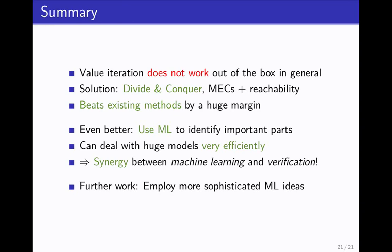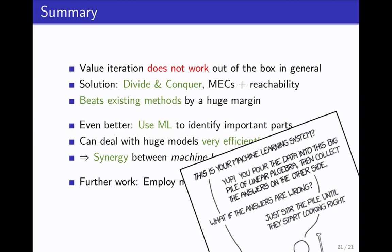In summary, what have we done? We've shown that value iteration does not work out of the box in general. We provided a simple solution, which is a divide-and-conquer approach. This already beats existing methods by a huge margin. Even better, we use machine learning to identify important parts and then focus our computation on that. This is kind of the key takeaway note I want to give in this talk. You can actually use machine learning for verification without sacrificing precision. You just use machine learning in some way to identify the important thing and then do whatever is the right thing to do there. Further work, more sophisticated machine learning. I mean, this is kind of a simple machine learning idea. Maybe we can use some kind of neural network to do a bit more interesting stuff. That's all, folks. Now it's time to ask questions or go for lunch.